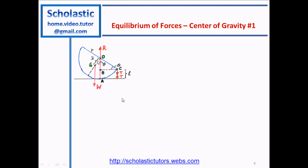Now let's look at the equilibrium conditions. We take the moments across point A. During equilibrium, the moment due to T and the moment due to W across A should be equal. The reaction force moment becomes zero because the distance from R to A is zero. So the two forces: T times R cos θ is the moment due to T, and the moment due to W is W times X-bar times sin θ, where X-bar is the distance OG, the center of gravity.